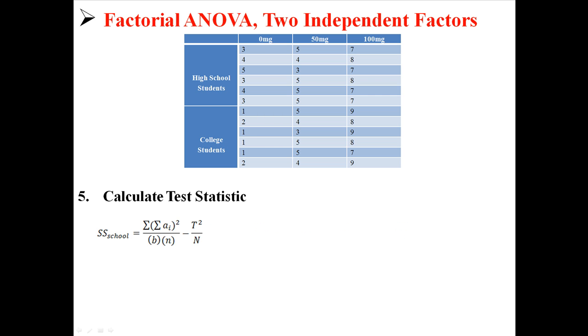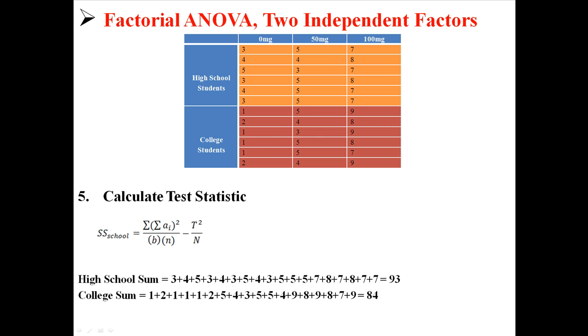So let's start with school. This is the equation for sum of squares school. Now we already know most of this stuff. We know b, we know n, we can put that stuff in there. That's simple. So let's just move on. The top part of the first fraction is saying the sum of all a sums squared.